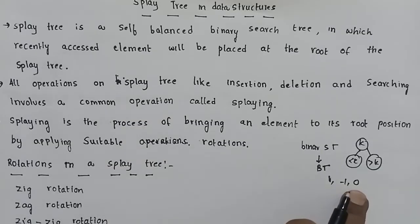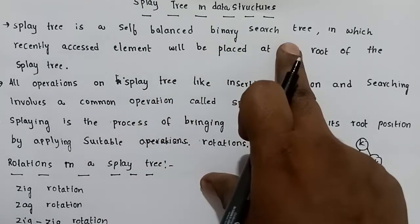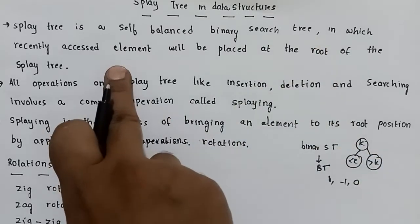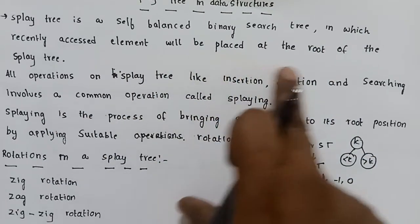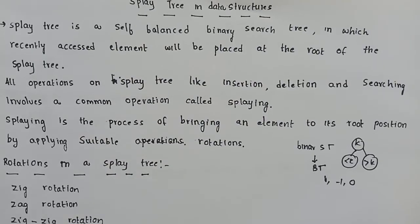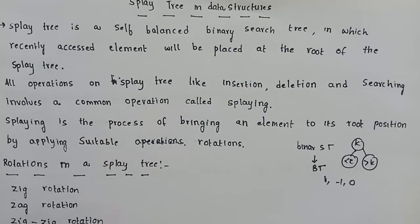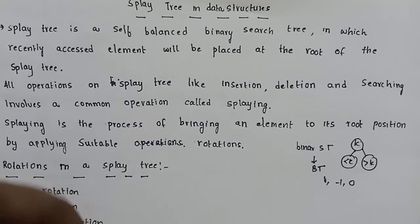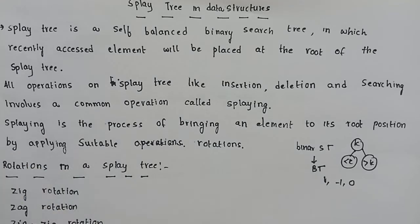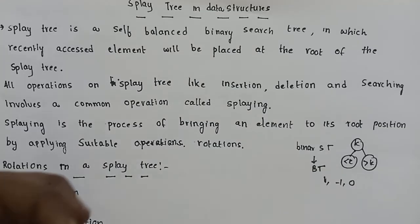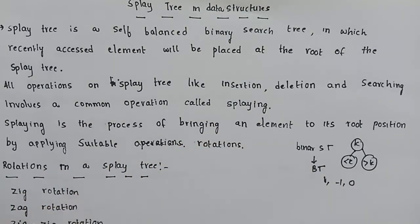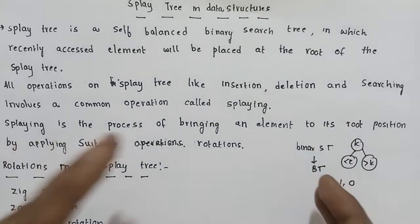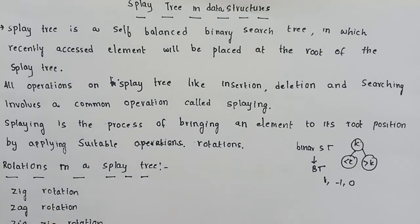The Splay Tree is a self-balanced binary search tree in which the recently accessed element will be placed at the root. This applies to recently inserted, deleted, or traversed elements — they are all placed at the root. That is the Splay Tree definition.